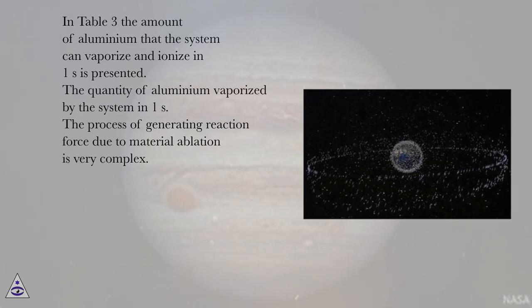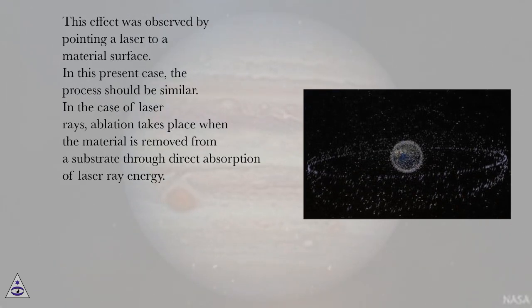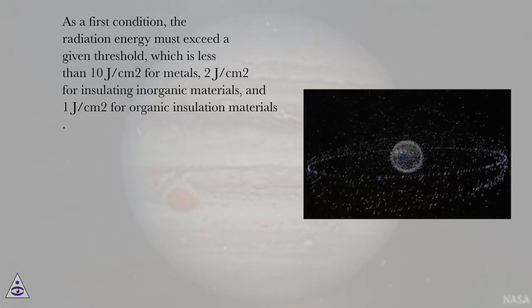This effect was observed by pointing a laser to a material surface. In this present case, the process should be similar. In the case of laser rays, ablation takes place when the material is removed from a substrate through direct absorption of laser ray energy. As a first condition, the radiation energy must exceed a given threshold, which is less than 10 joules per square centimeter for metals, 2 joules per square centimeter for insulating inorganic materials, and 1 joule per square centimeter for organic insulation materials.